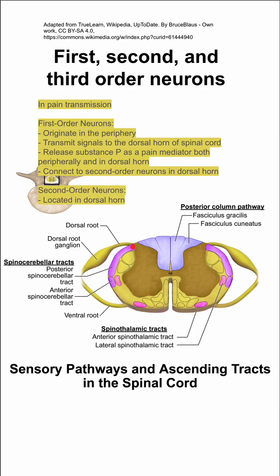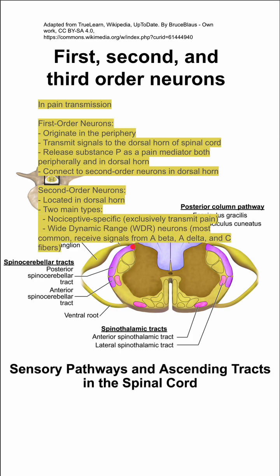The second order neurons are located in the dorsal horn and there are two main types. There are nociceptive specific neurons which exclusively transmit pain, and there are wide dynamic range neurons that are most common and receive signals from A-beta, A-delta, and C fibers.